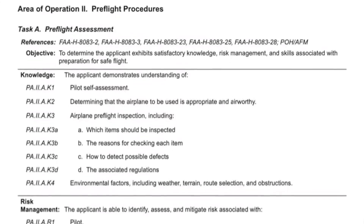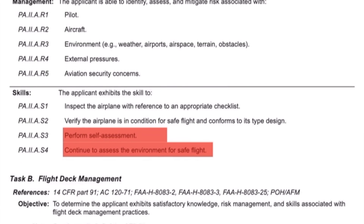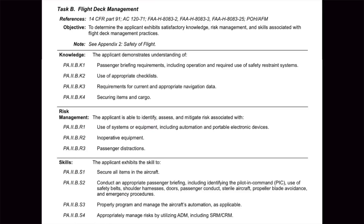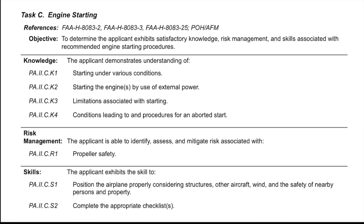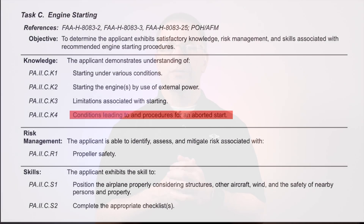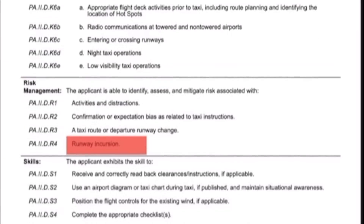Area of Operation 2 also has several changes. Task A specifically calls out the need to demonstrate your self-assessment and to continue to assess the environment as your flight goes along, so make sure your assessments aren't just one and done. Task B has new elements: a knowledge element regarding securing items and cargo, a skill element about ADM and use of SRM and CRM, and a risk element about managing passenger distractions. Task C adds a knowledge element about when and how to abort an engine start. Tasks D and E add risk elements associated with runway incursions as well as confirmation and expectation bias. With incursions being an FAA focus area, be prepared to discuss them.